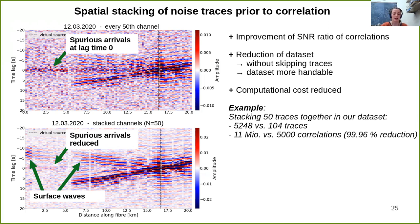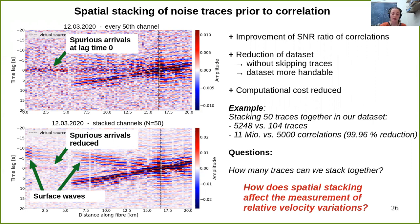However, spatial stacking is a common method in seismology when analyzing direct waves, but we are looking at the coda, which reflects a diffused wave field with waves arriving at different angles from different directions. This suggests we need to be careful when stacking spatially. But with an interstation distance of 4 meters and wavelengths of 3 kilometers, we should be able to stack in space at least up to some degree. The main question is how many traces can we actually stack together, and how does spatial stacking affect the measurement of relative velocity variations?